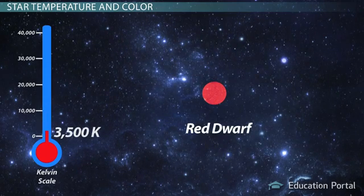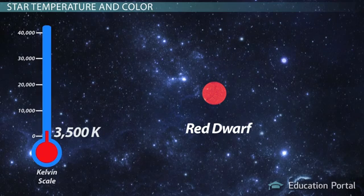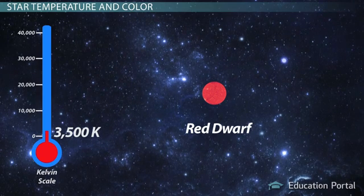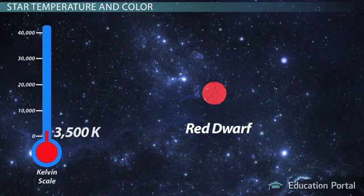The coolest stars in the universe are the red dwarf stars. These are very tiny stars, some of the tiniest, so they don't burn as hot, and their surface temperature is only 3500 Kelvin. The light they give off looks mostly red to us.